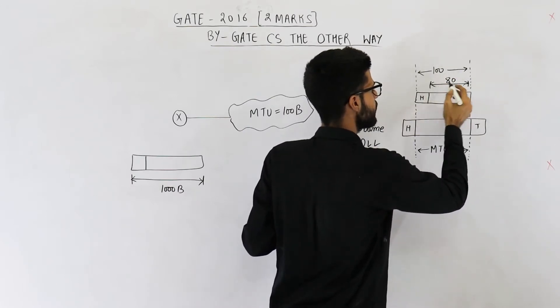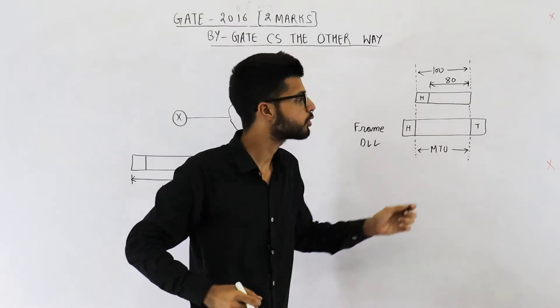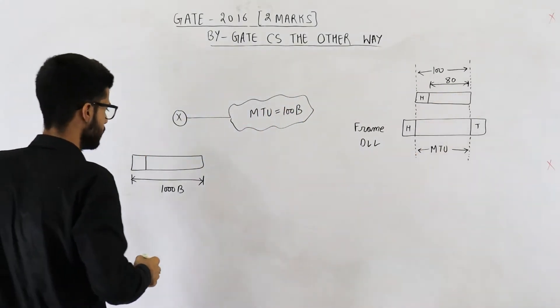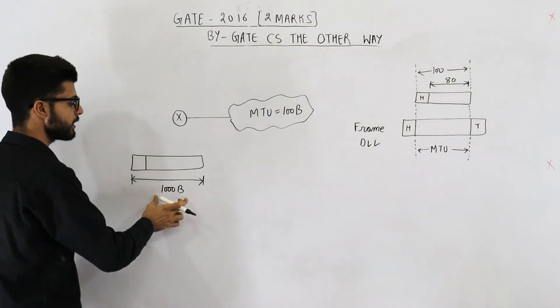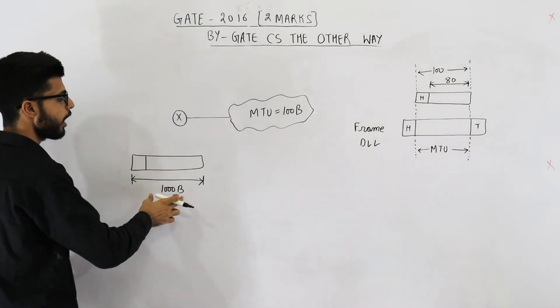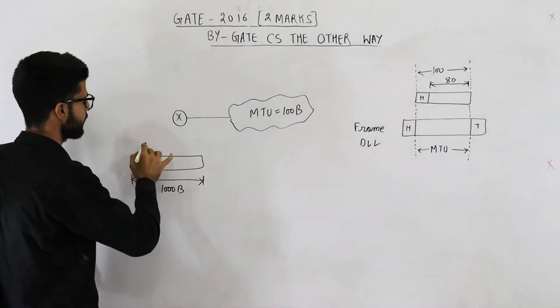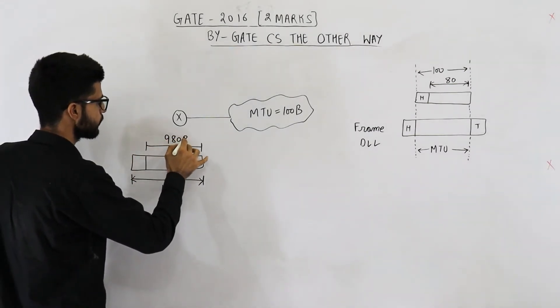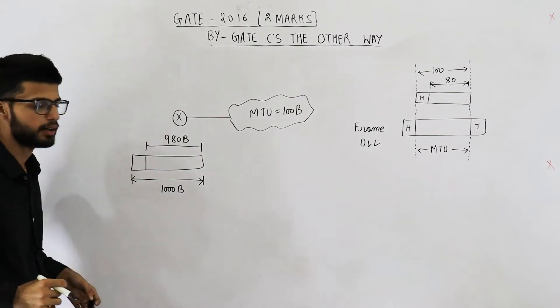So maximum data can be 80 bytes only. Now see, this packet is of total 1000 bytes. How much data will be there in this packet? Data will be 980 bytes. Just remove the 20 byte header.